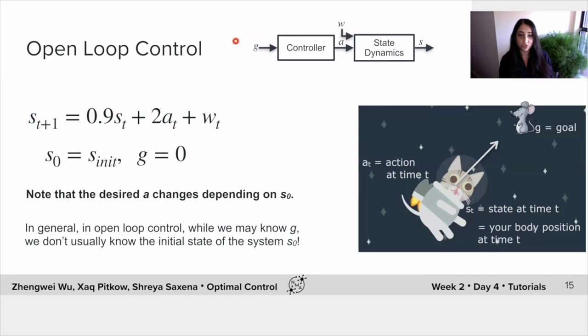But the problem is that in open loop control, in fact, while we may know g, the goal, we don't usually know the initial state of the system s0. We may know the dynamics, but we don't know the state itself. And this creates a problem because even if you now apply a suboptimal action for a couple of time steps in order to get to your goal somehow, you are still affected perhaps by this process noise. So even if you get to your goal, you may be knocked around, around your goal, let's say like go in circles or just drift around the goal, you can't do anything about it. So this does create a problem.